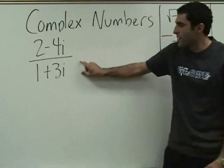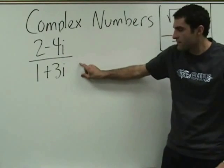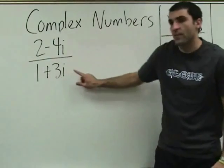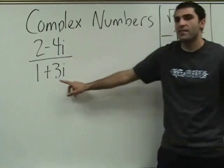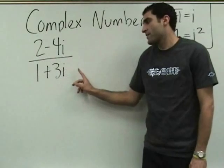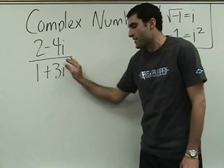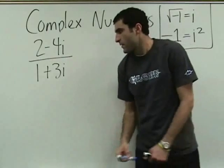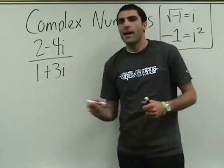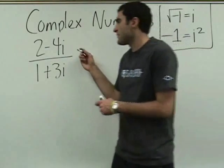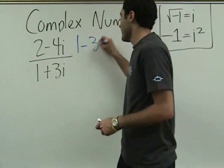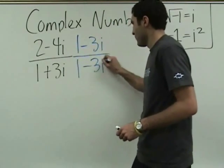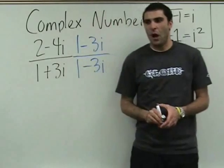The reason is that if we have an i here and we distribute it, we'd get i plus 3i squared. The 3i squared would become minus 3, but there's still an i. So you multiply it by its evil twin brother, one minus 3i.